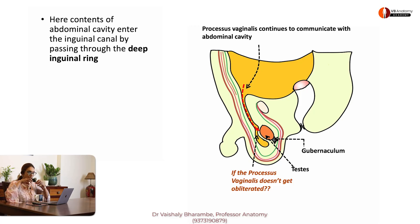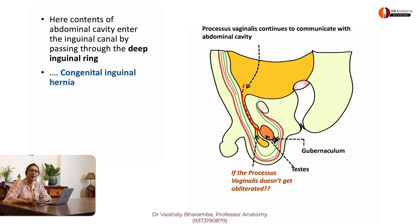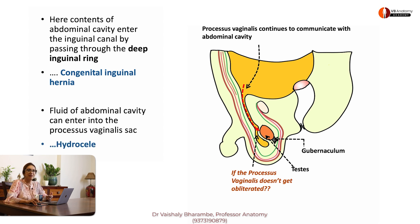What will happen if the abdominal cavity is in communication with the patient's scrotal sac? The abdominal contents are going to want to come through this tubular opening. Intraabdominal pressure is high, so the contents are going to want to come in, resulting in what is called congenital inguinal hernia. If contents can come, so can the fluid — the fluid can come down resulting in what is called hydrocele. That's how hydrocele gets produced.